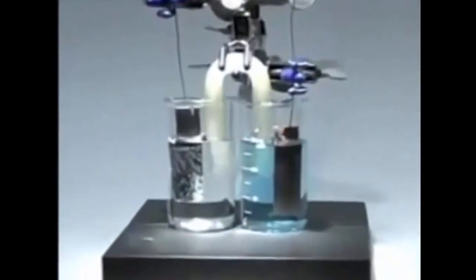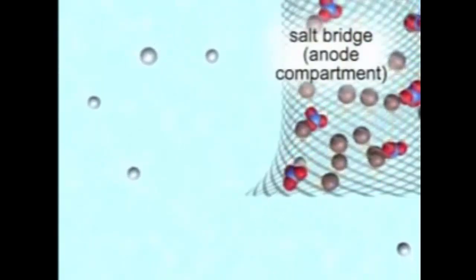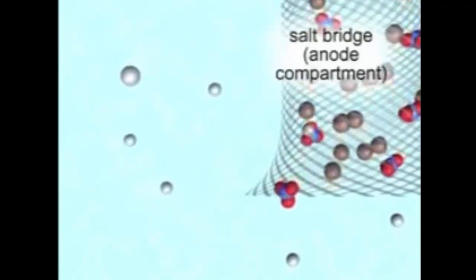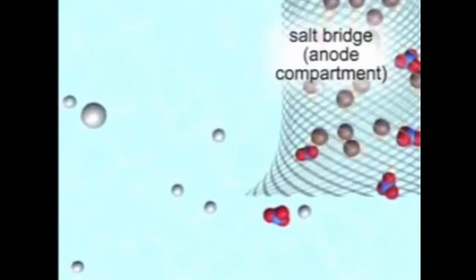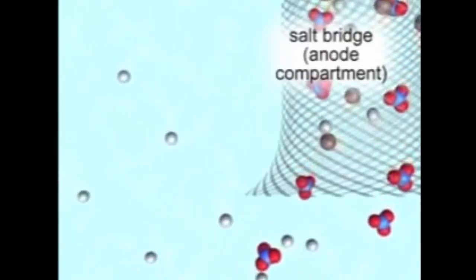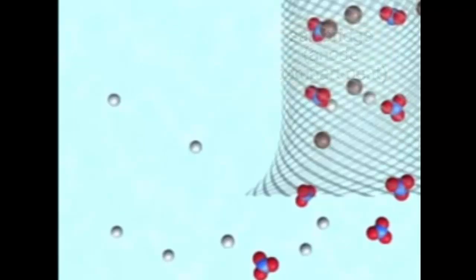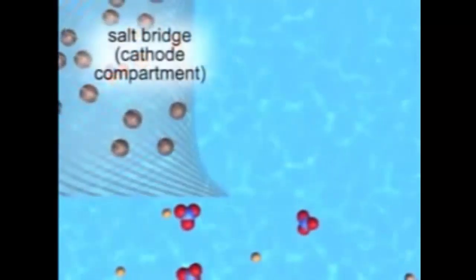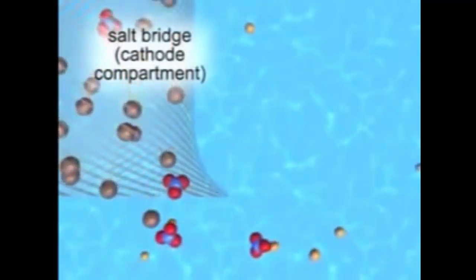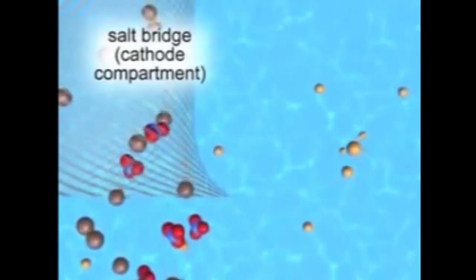The non-reactive sodium and nitrate ions of the salt bridge prevent the buildup of charge that would otherwise halt cell operation. In the anode compartment, nitrate ions leave the salt bridge to balance the gain of positive charge as zinc ions enter the solution, and some zinc ions also enter the salt bridge. In the cathode compartment, sodium ions leave the salt bridge and nitrate ions enter it to balance the loss of positive charge as copper(II) ions leave the solution and are reduced at the cathode.